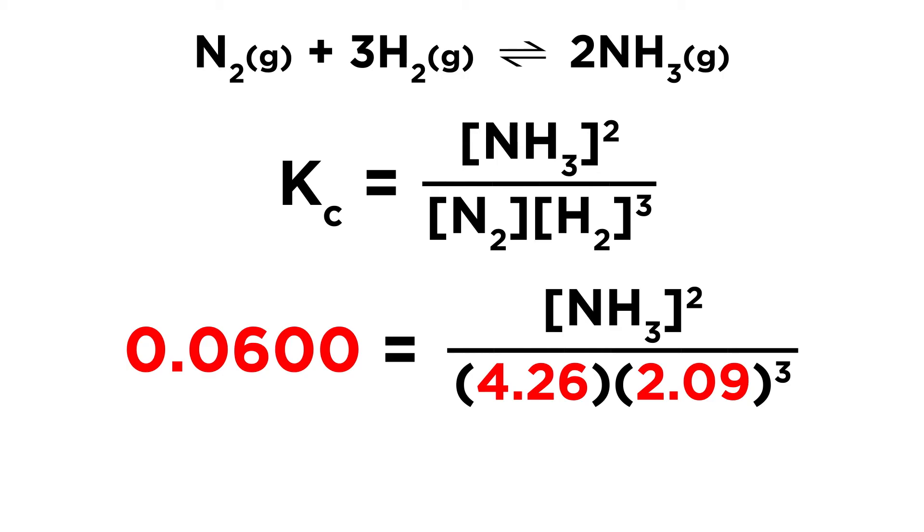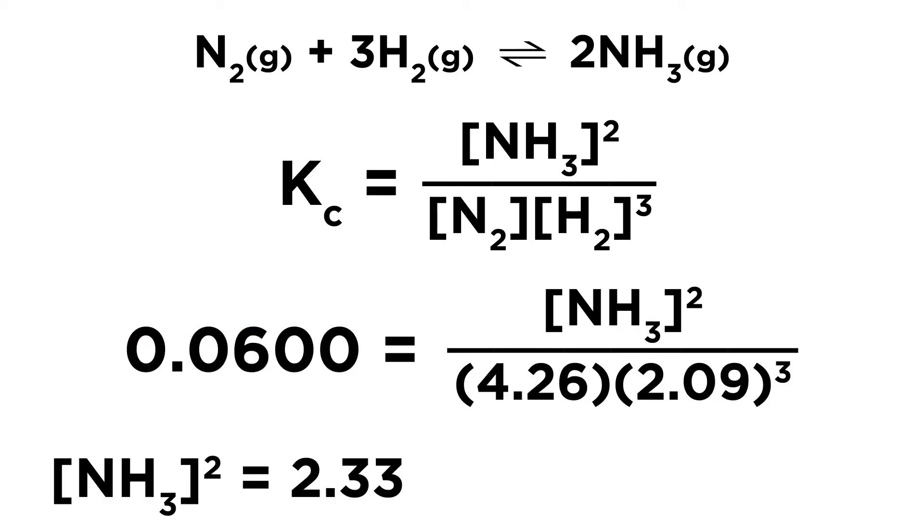So here, all we have to do is a little bit of arithmetic, and we get the ammonia concentration squared as being equal to 2.33, and then we take the square root, and our answer will be 1.53 molar.